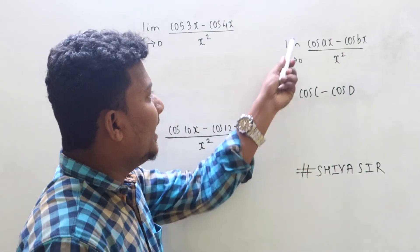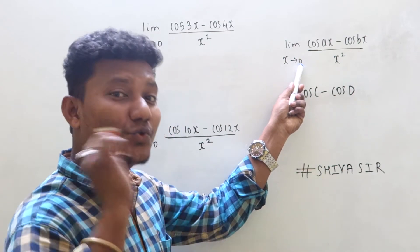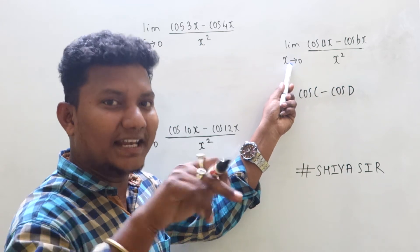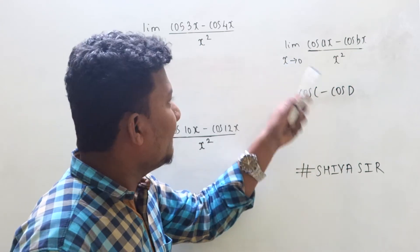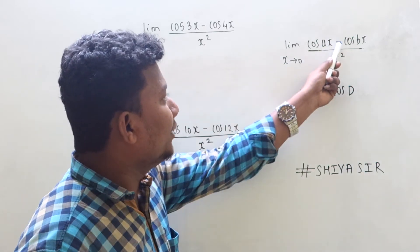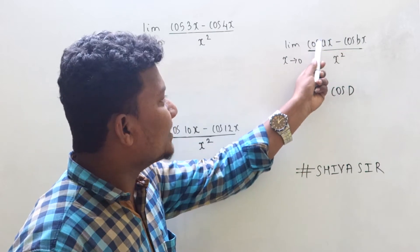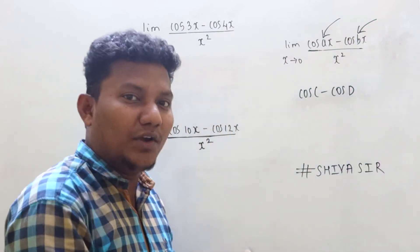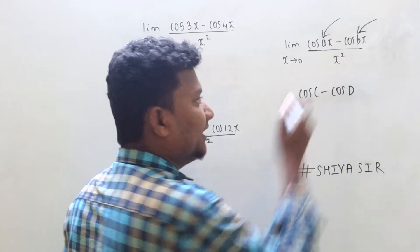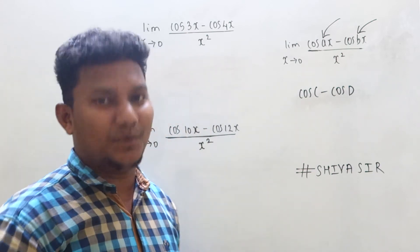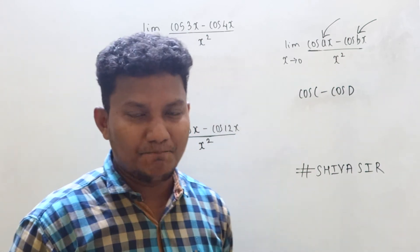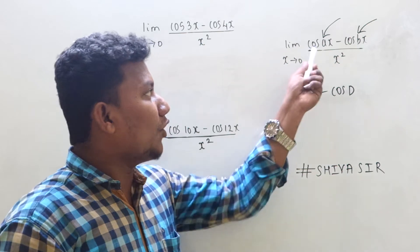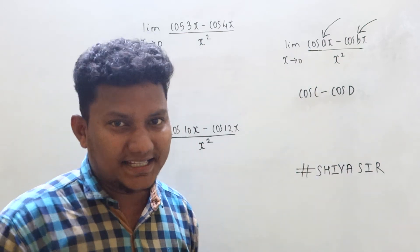Whenever the pattern of the question is like this — limit x tends to 0, it has to be tends to 0. If it is not tends to 0, then you have to use substitution to convert that limit into tends to 0. In the numerator it has to be cos(ax) minus cos(bx), where a and b are the coefficients of x. And the denominator has to be x square only — then the trick is applicable.